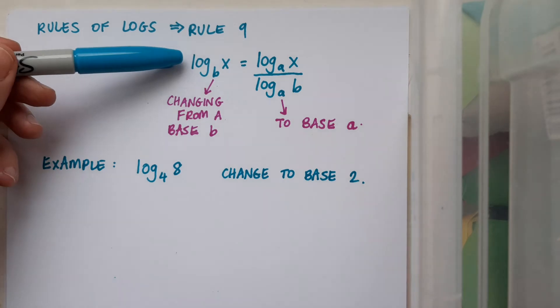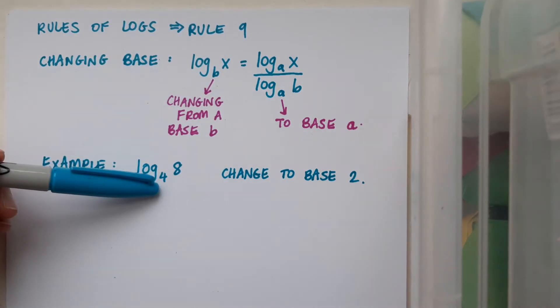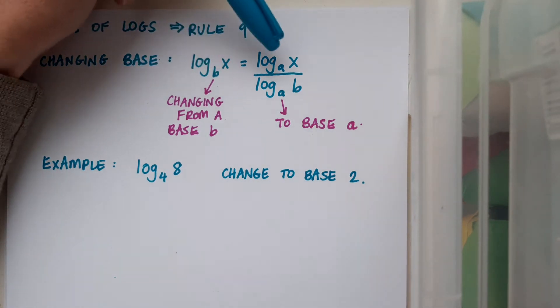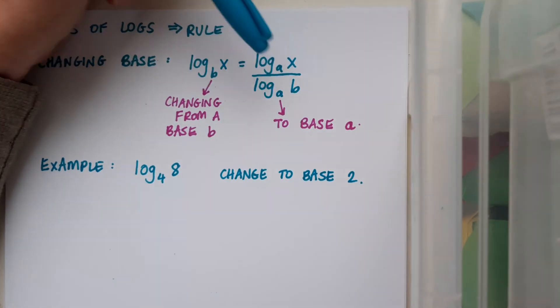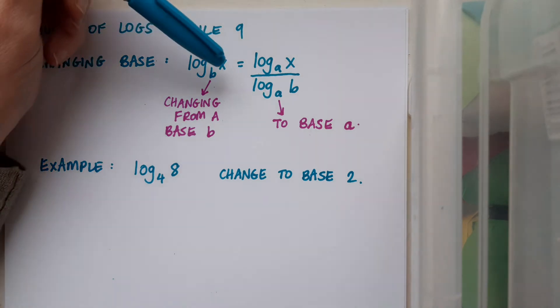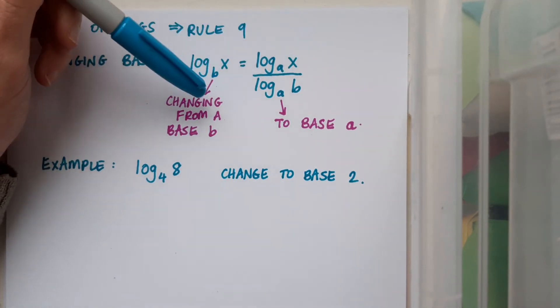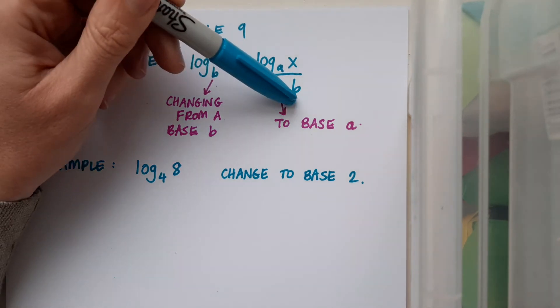So I need to have a look at my rule. Well, at the moment my base is 4 and I want to change it to a base 2. So instead of having a base 4, I'm going to have a base 2 in both of these positions. And then the large number in the log is going to go on top, and the original base in the log is going to go on the bottom.